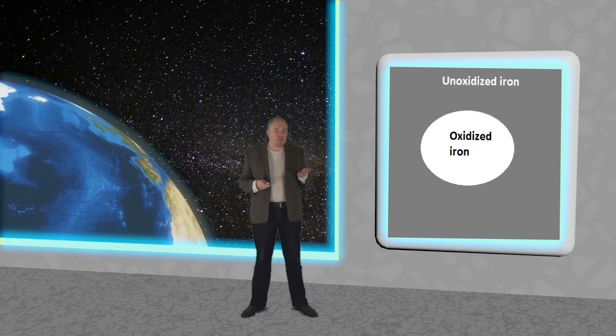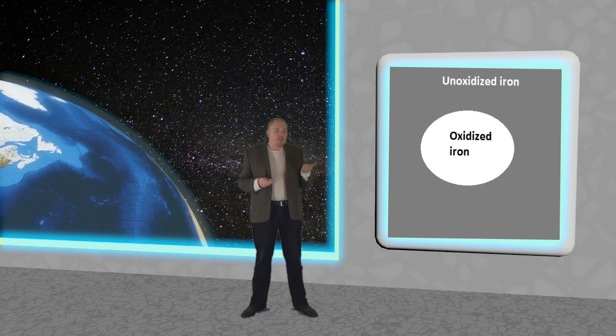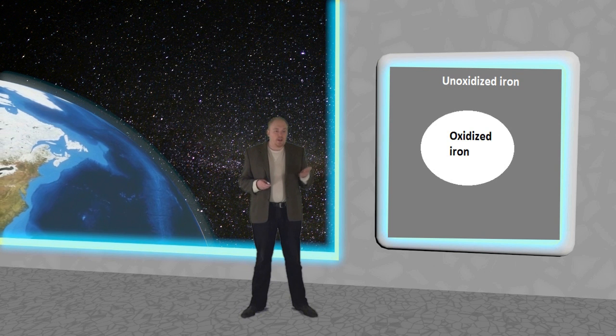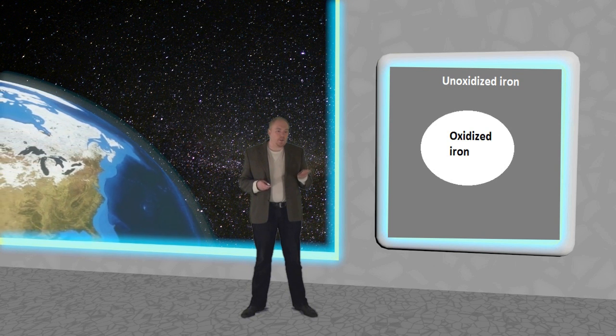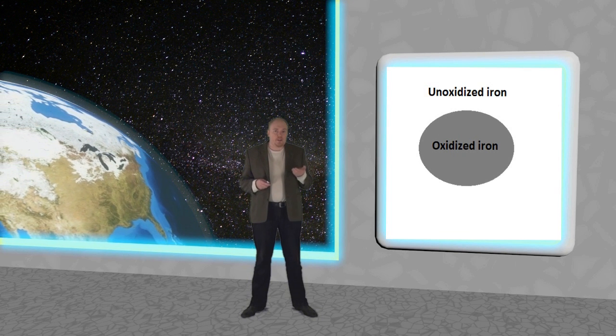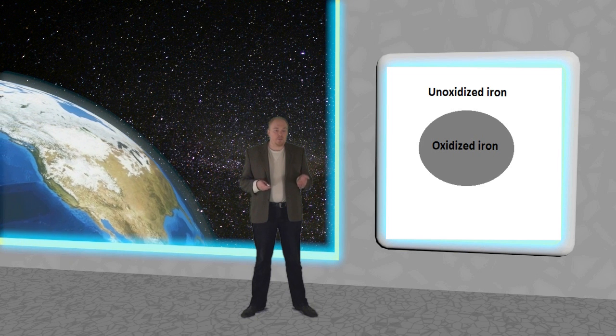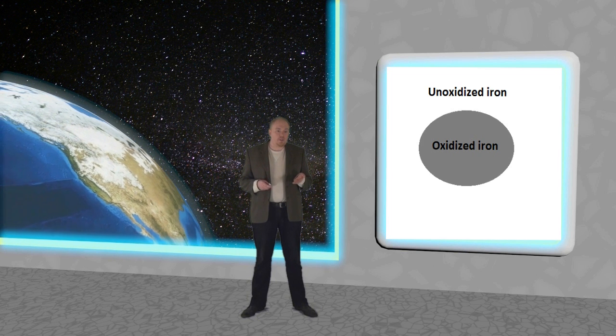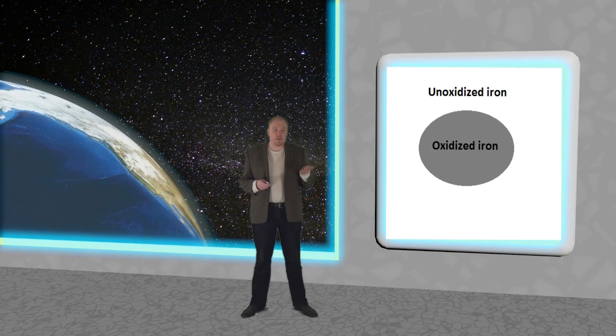However, if we collected only photoelectrons that belong to unoxidized iron, then the image would look different, as the oxidized part in the middle is black and the surrounding area is brighter.